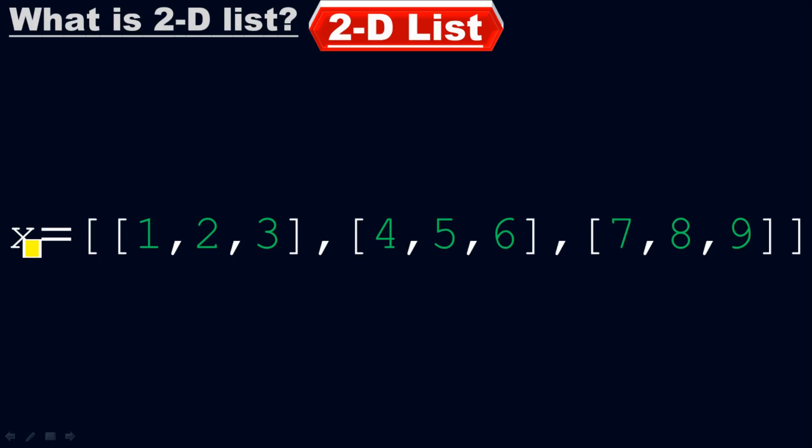Two-dimensional list, because remember, all the elements of the list are lists. Which means that we have list within the list. Therefore we call it 2D, two-dimensional list.